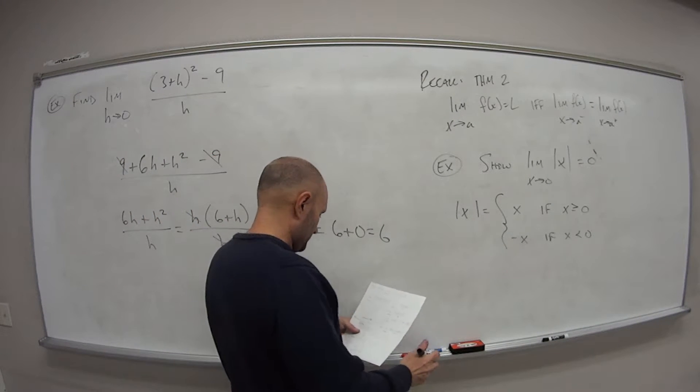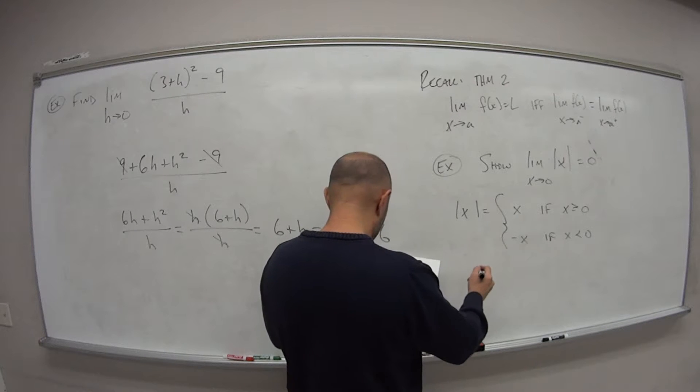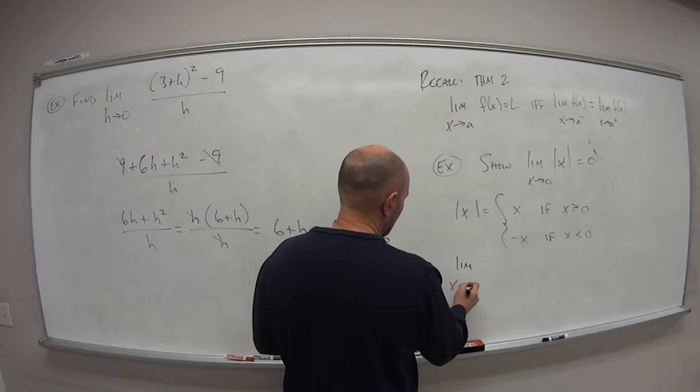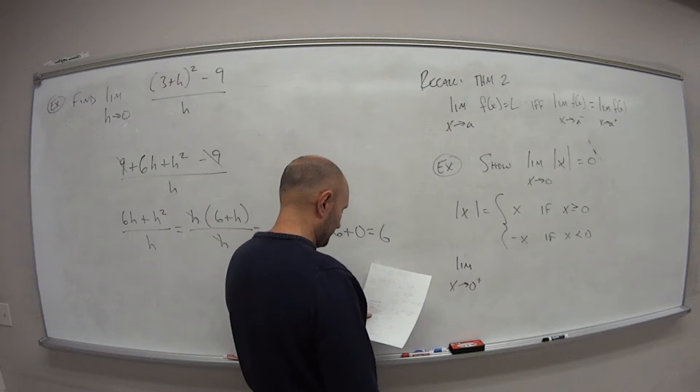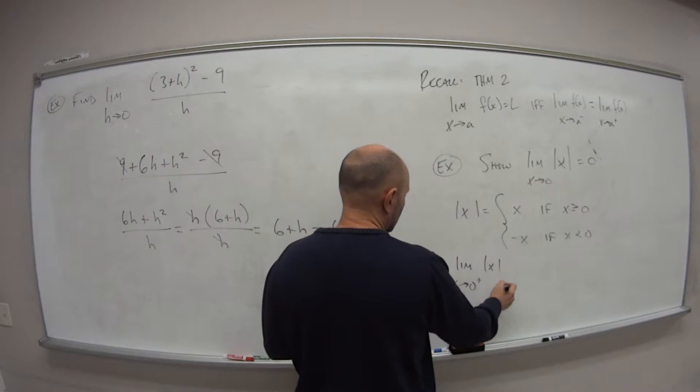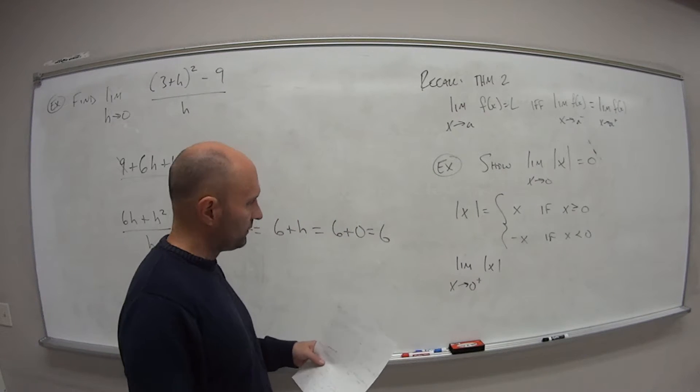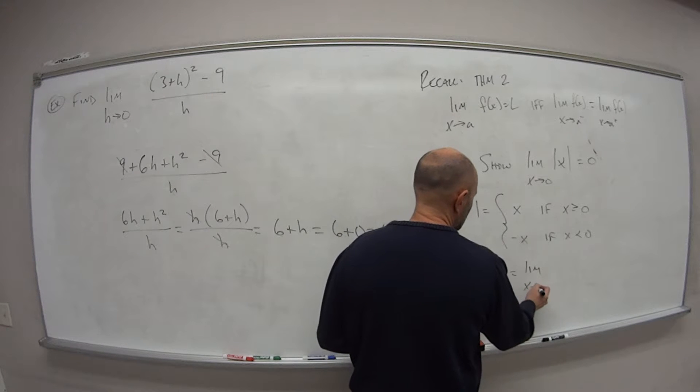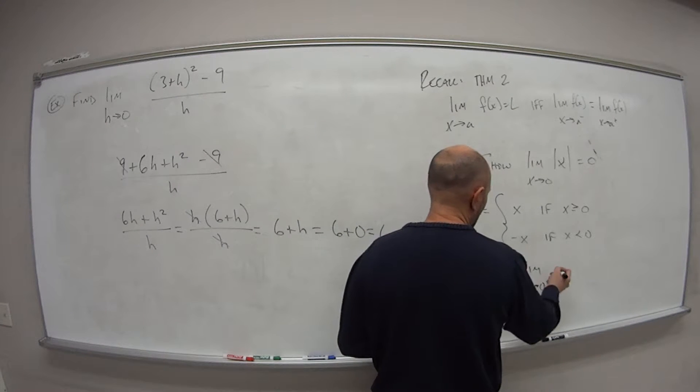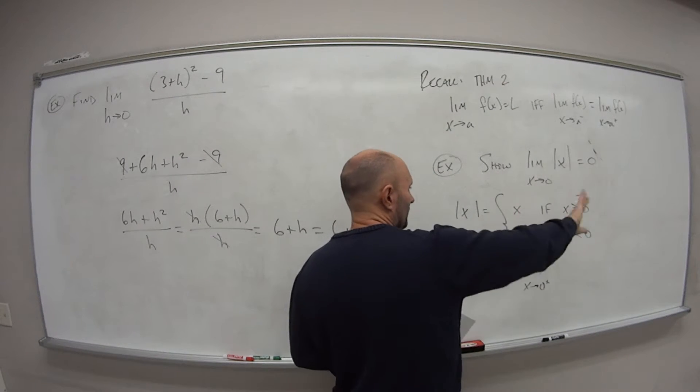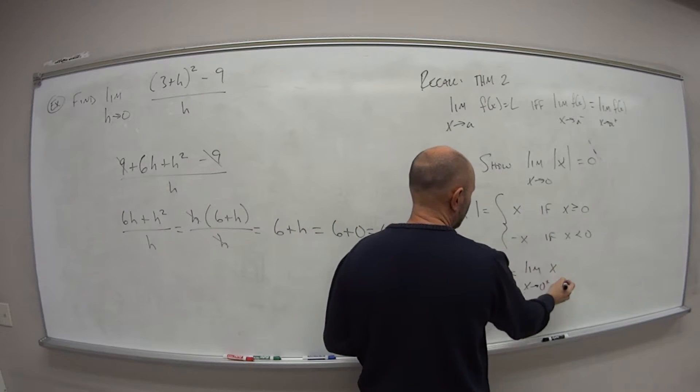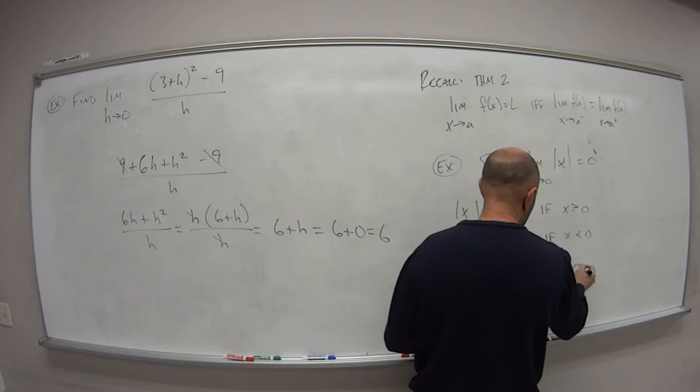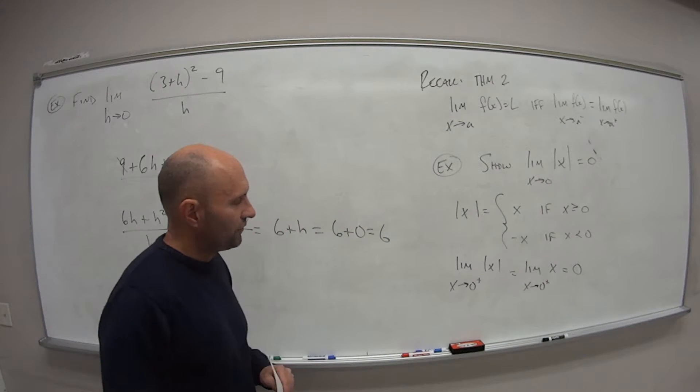So if we use this property to show that this limit is actually equal to 0, then we have what? We have that the limit as x approaches 0 from the right side, so the little plus side, of absolute value of x is equal to the limit as x approaches 0 from the right side of, well, when we're talking from the right side, that means we're using our function here, x. And so therefore, we can just plug in our value of a, which in this case would be 0.